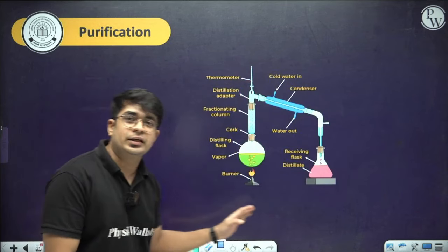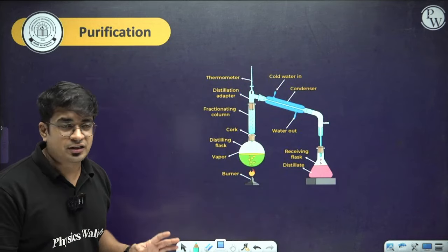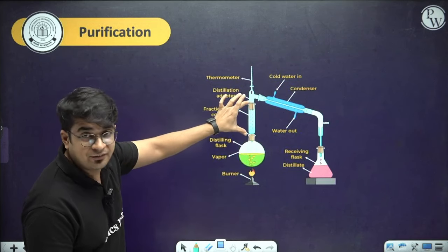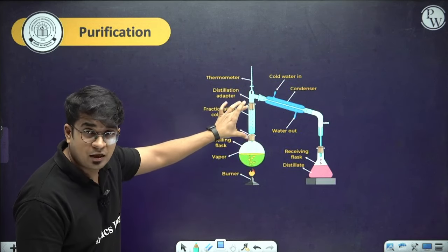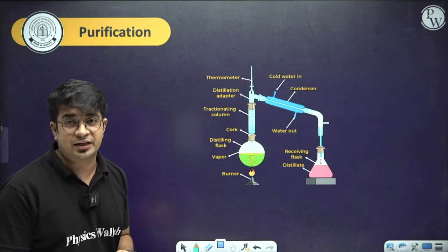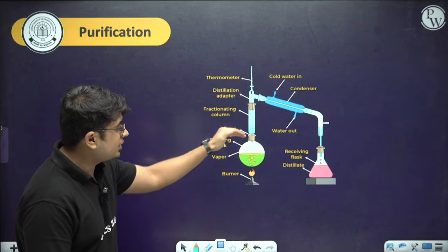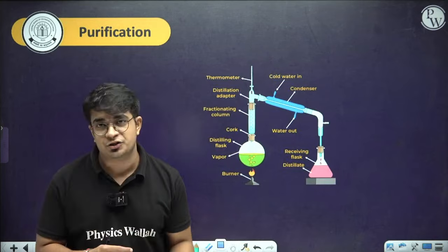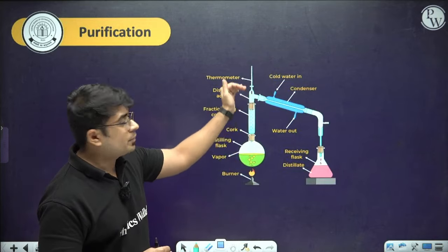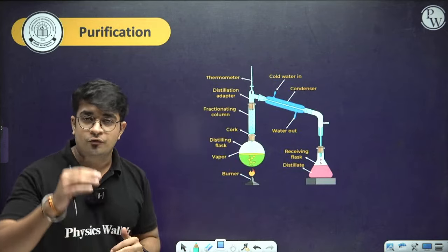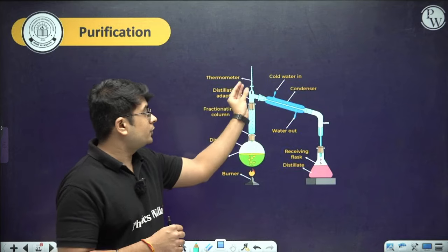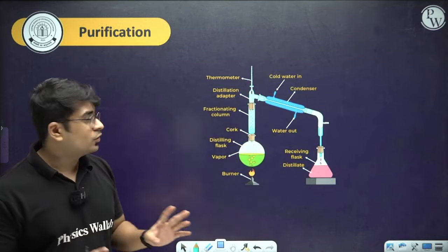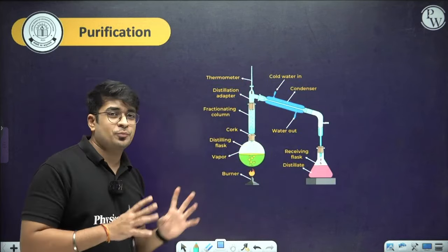In the fractional distillation setup, the round bottom flask is connected to a fractionating column with different theoretical plates. Each plate provides a surface for a separate type of distillation. The vapors of the lower boiling liquid come first and are condensed in the receiving flask.